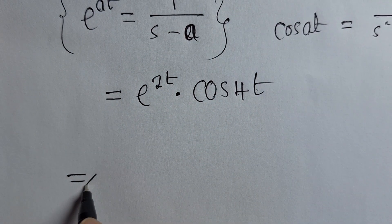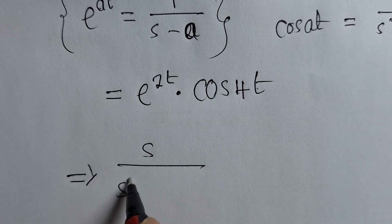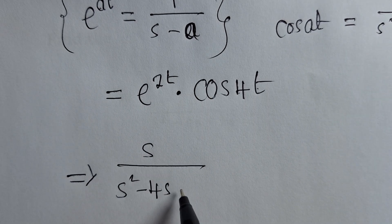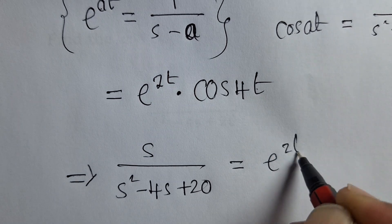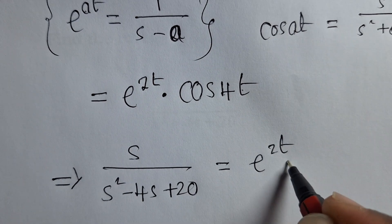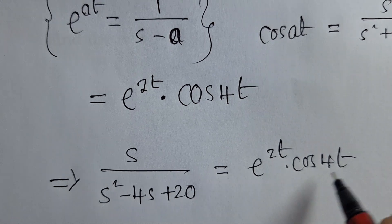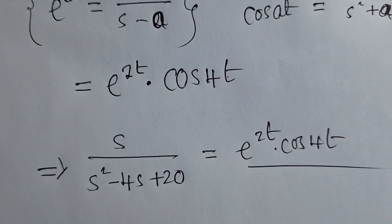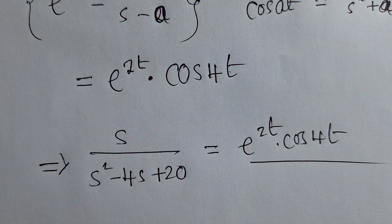So we can say the inverse transform of this right here will be equal to e to the power 2t multiplied by cos 4t. This is our answer. Thank you so much for watching. Please remember to subscribe. This has been C Chamber Jacob. And bye-bye.